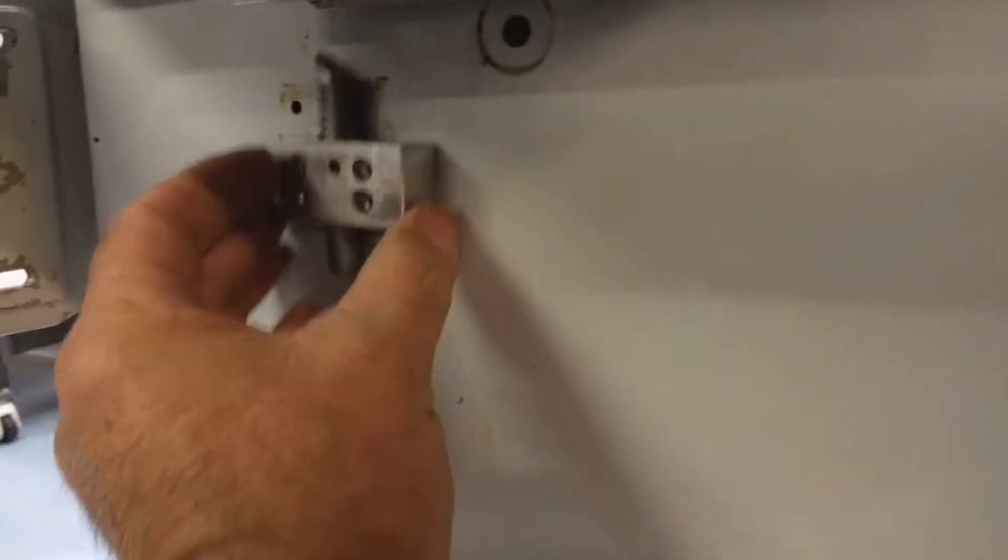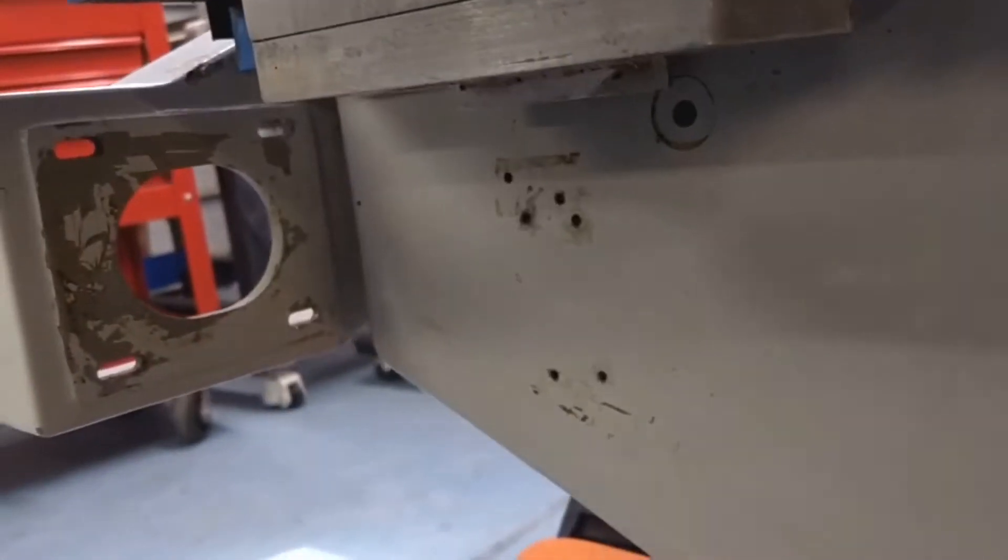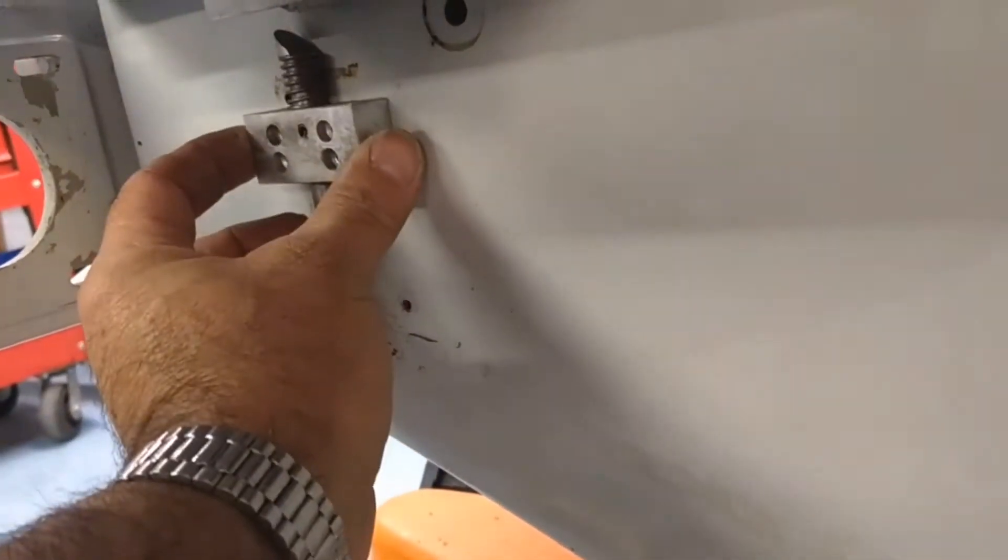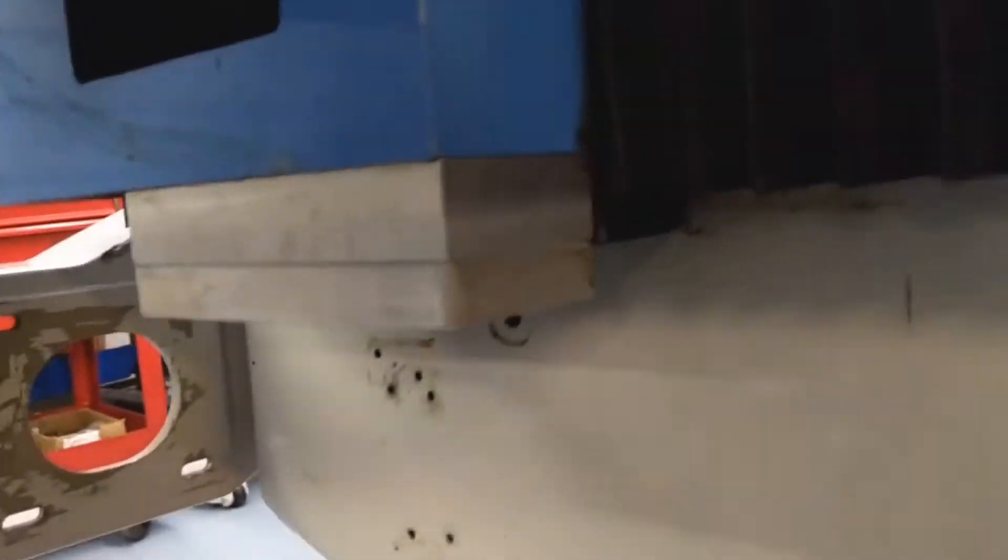There was a plunger affair up here like this and it pushed down on the limit switch here. As you can see the servo motor comes in here so it's quite tight. So I think it was an effort to get some room and put the limit switch below the servo motor. That's my guess anyway.